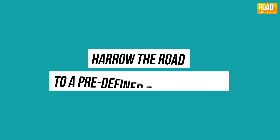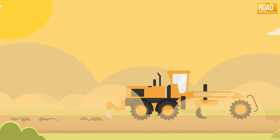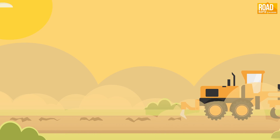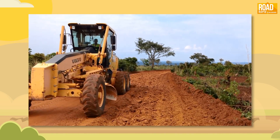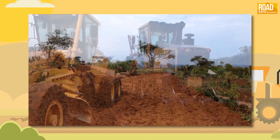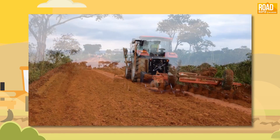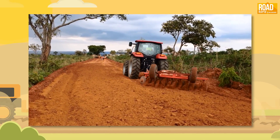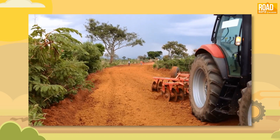After grading, the road surface will be harrowed to the optimum depth. The lumps are then ground to smaller pieces for optimal water absorption.